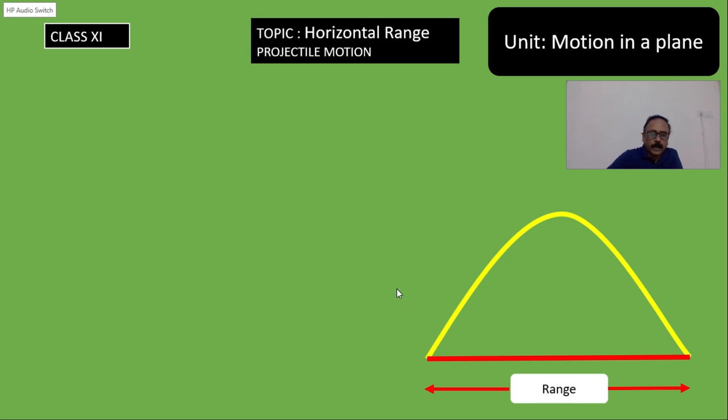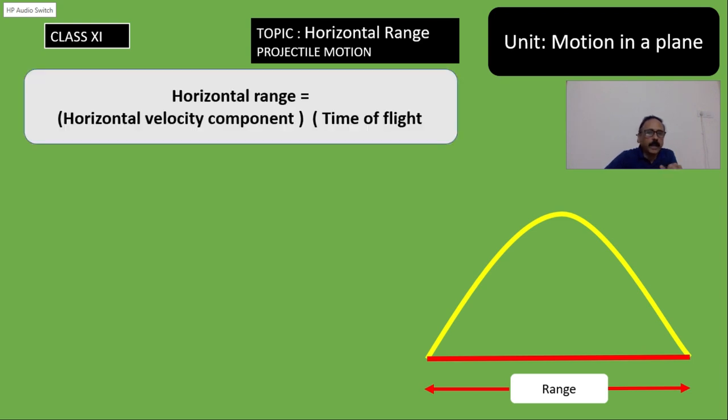Now, let's derive the formula for range. Horizontal range is the product of horizontal velocity component and the time of flight.